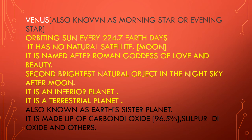Venus is also known as Earth's sister planet. Venus is mainly made of carbon dioxide, sulfur dioxide, and hydrogen. The percentage of carbon dioxide on Venus is 96.5%, which is much higher than on Earth. Almost 95% of its atmosphere is carbon dioxide. So think about how warm it will be.